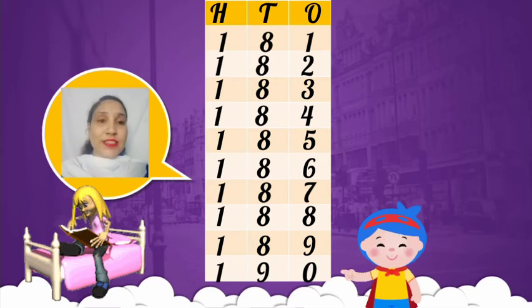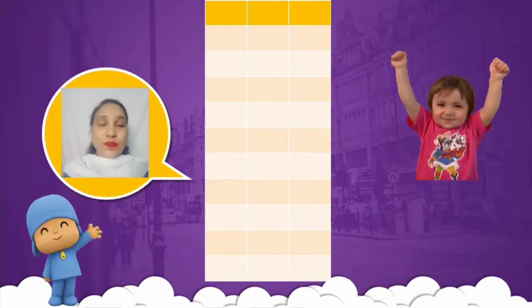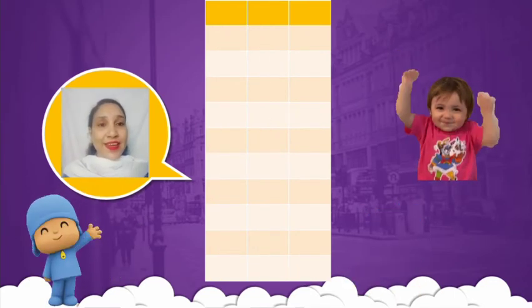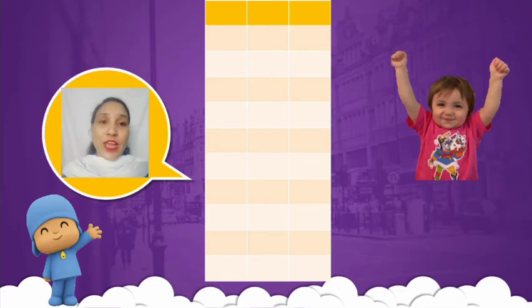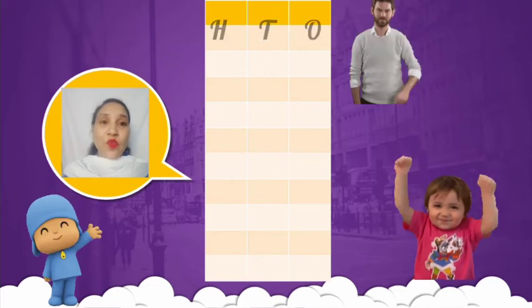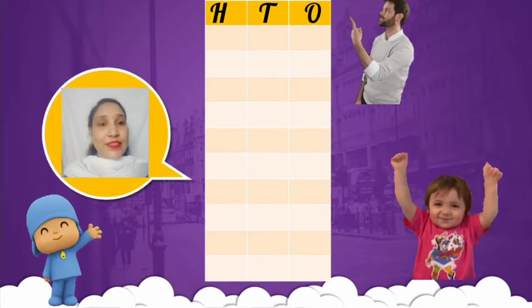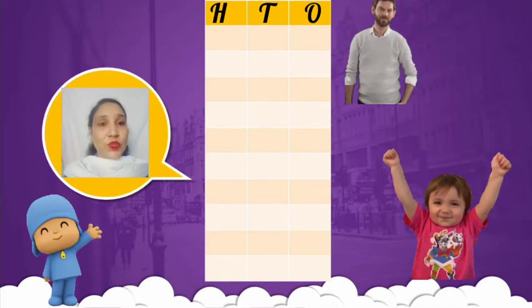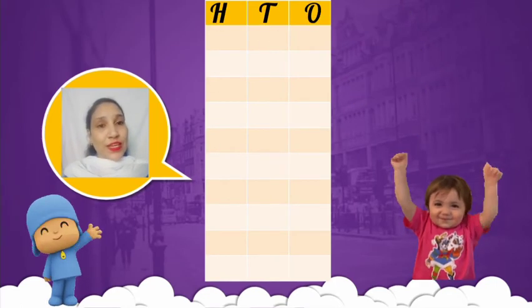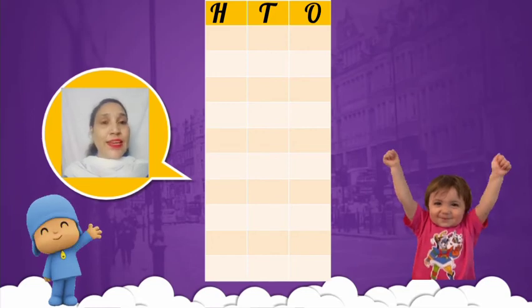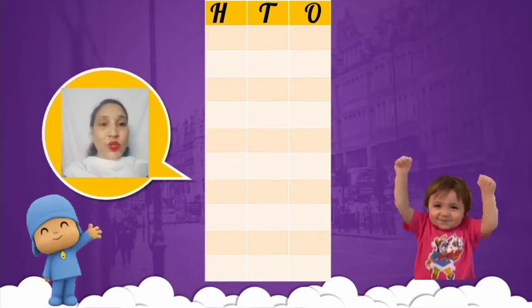Okay, students. Now see the next line. We have to write down hundreds, tens, and ones on the top of the counting, similarly to the last lines.